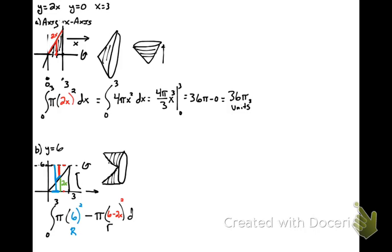So now we're ready to integrate. And if we clean this problem up a little bit, we'll be integrating from, I'm going to pull the pi out. So this will be the integral from 0 to 3 of 36 minus 36 minus 24x plus 4x squared dx.